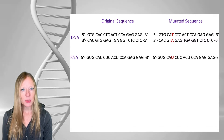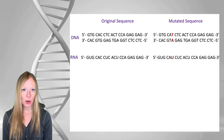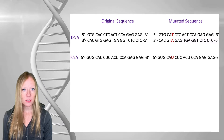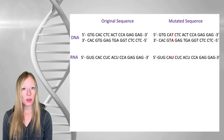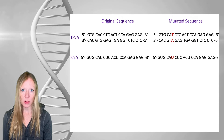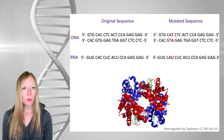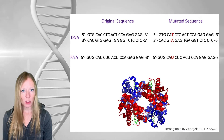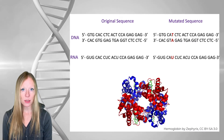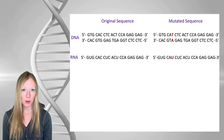By the way, this is a particular gene, and I'm showing you just part of the sequence. This is, in fact, the gene that codes for one of the subunits of hemoglobin. This is beta-globin, which hemoglobin is the protein that transports oxygen in the red blood cells of vertebrates.